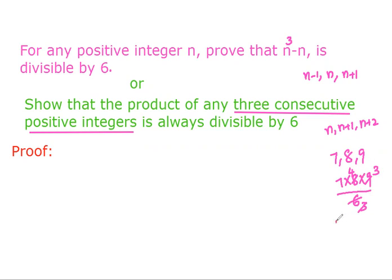Let us take another example: 10, 11, 12. These three are consecutive positive integers. If you multiply them, their product is divisible by 6. This is the numerical proof, but we have to prove it theoretically.